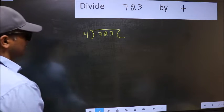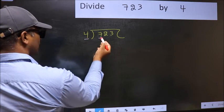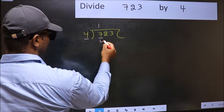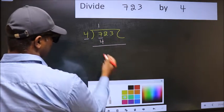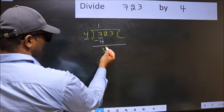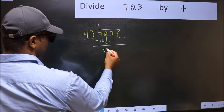Next, here we have 7 and here 4. A number close to 7 in 4 table is 4 once 4. Now you should subtract. 7 minus 4, 3. After this, bring down the beside number. So 2 down.